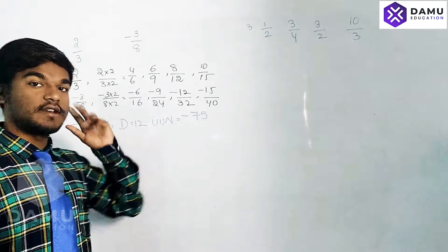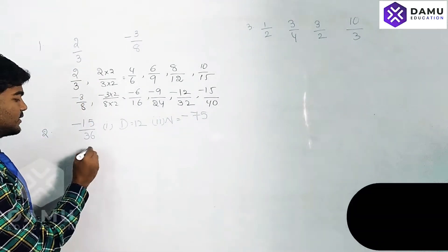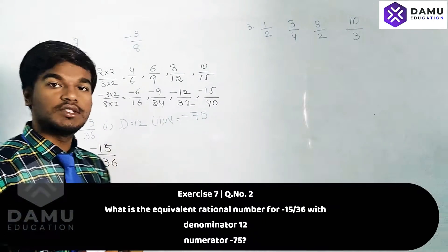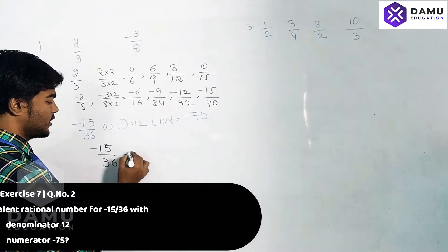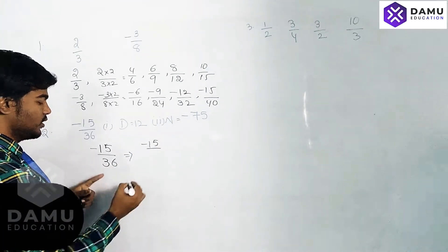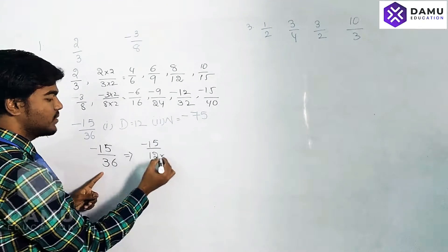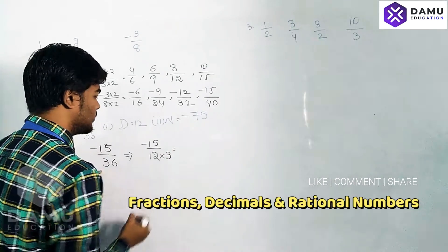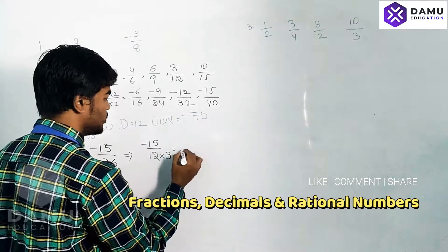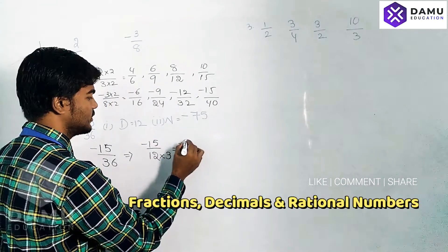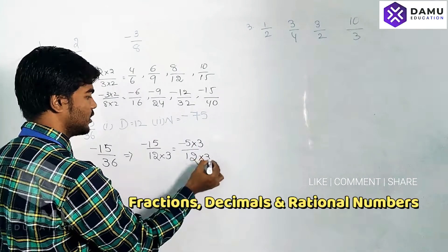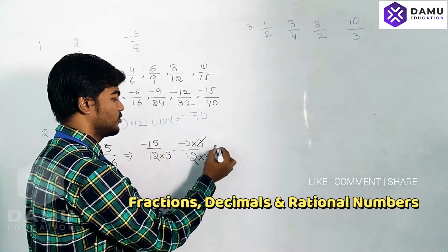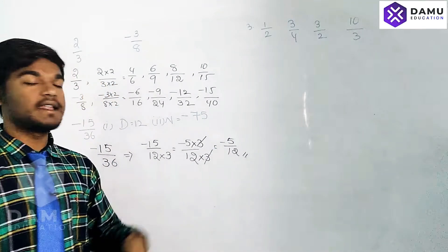If you cancel any of those, you'll get back to the original: 2/3 for the first, and -3/8 for the second. Next, for -15/36, we need to write it with denominator 12. So we write -15 as it is. For denominator 36 to become 12, we divide by 3. So -15 ÷ 3 = -5 and 36 ÷ 3 = 12, giving -5/12.